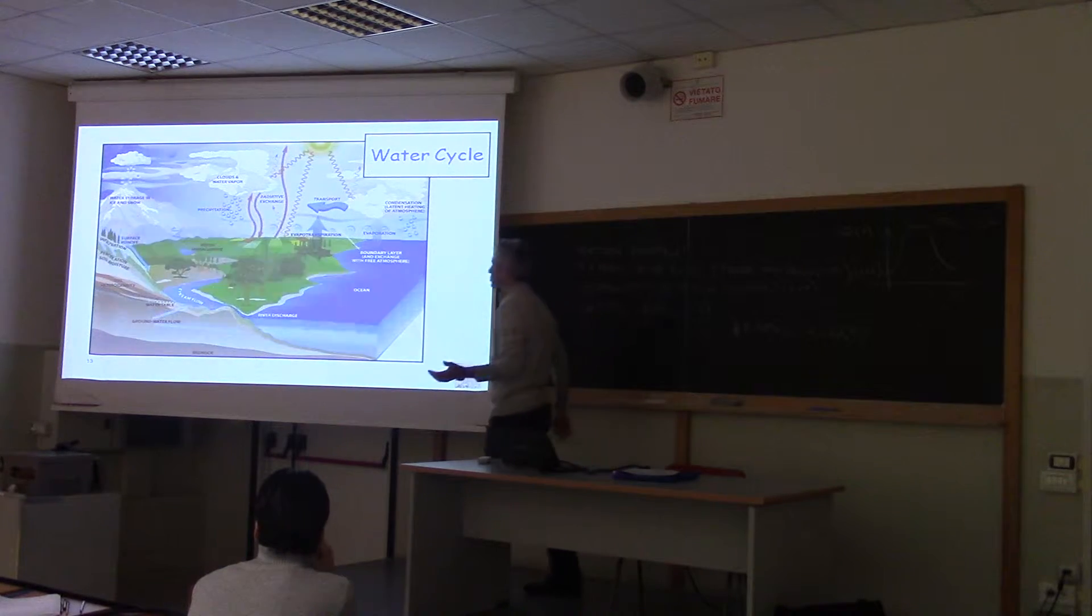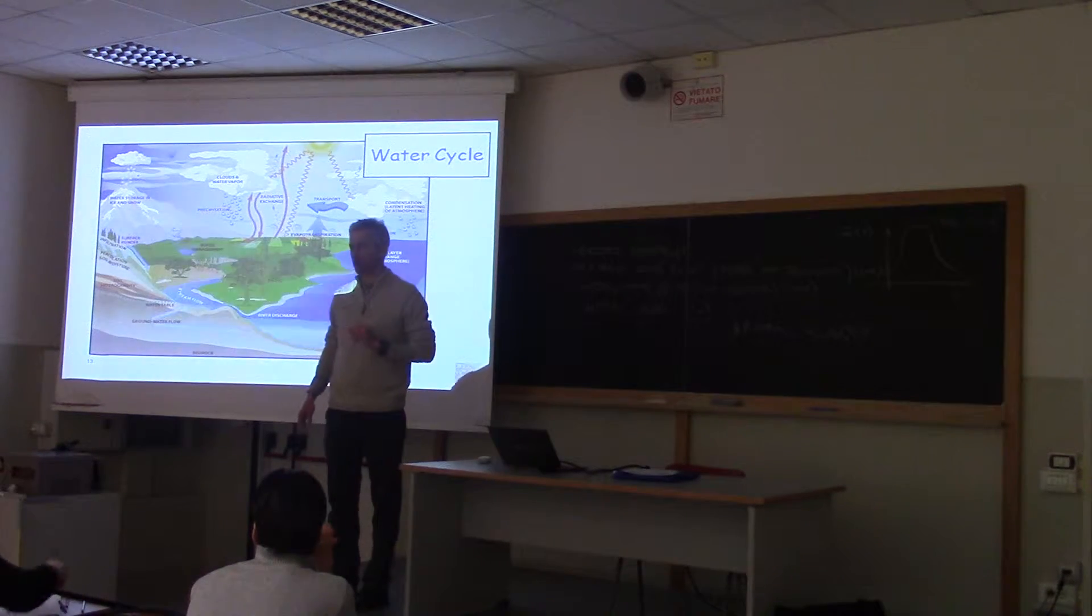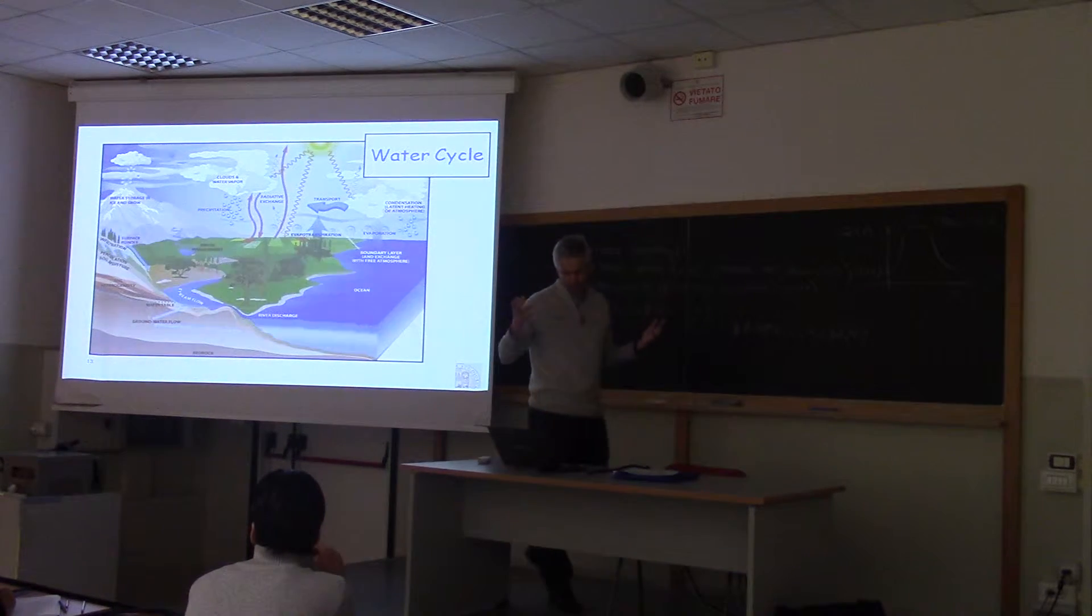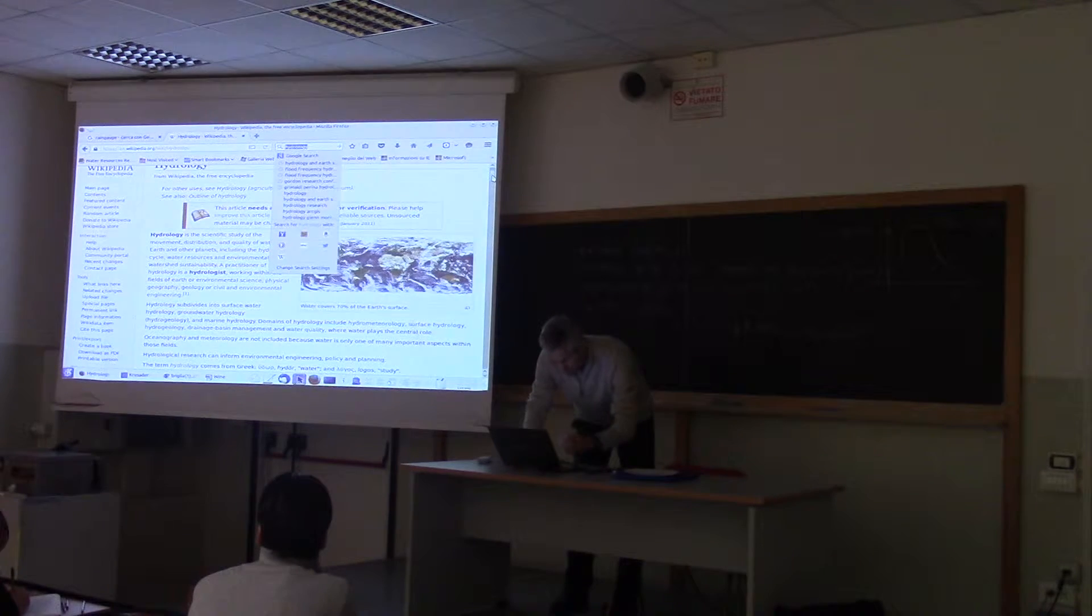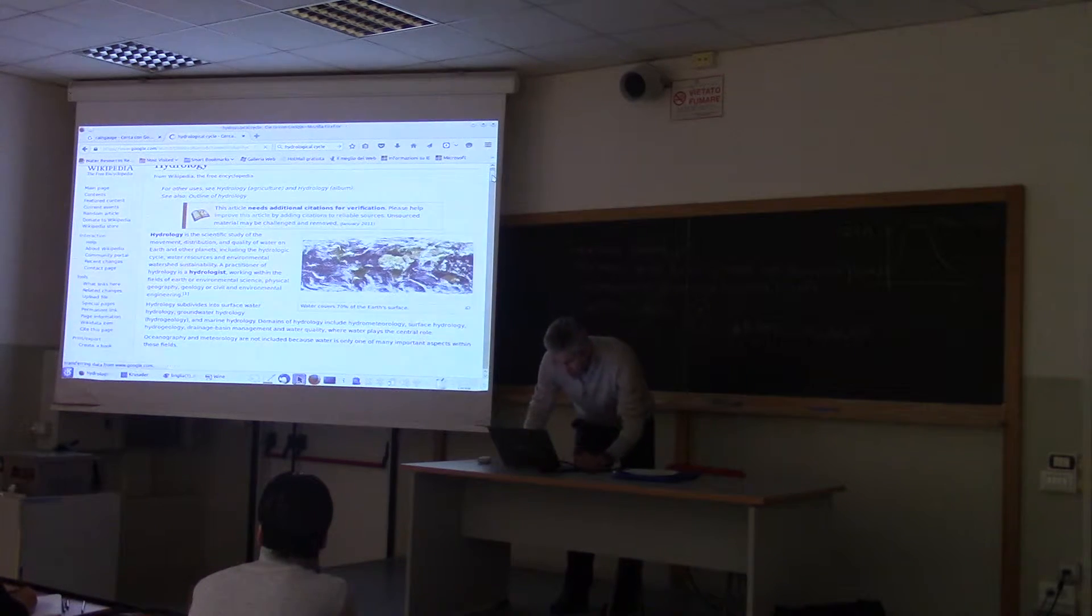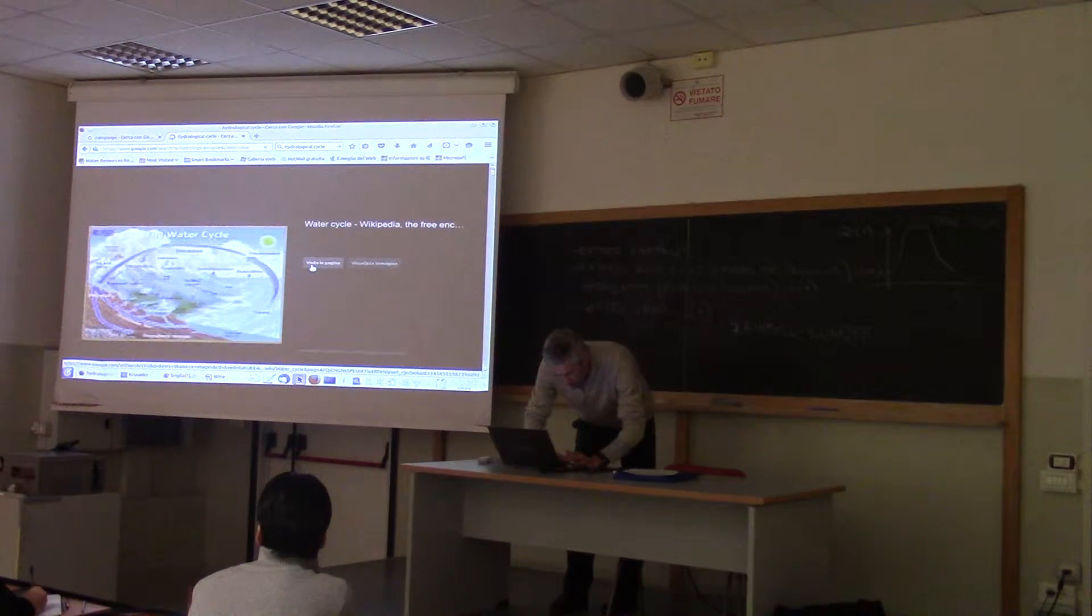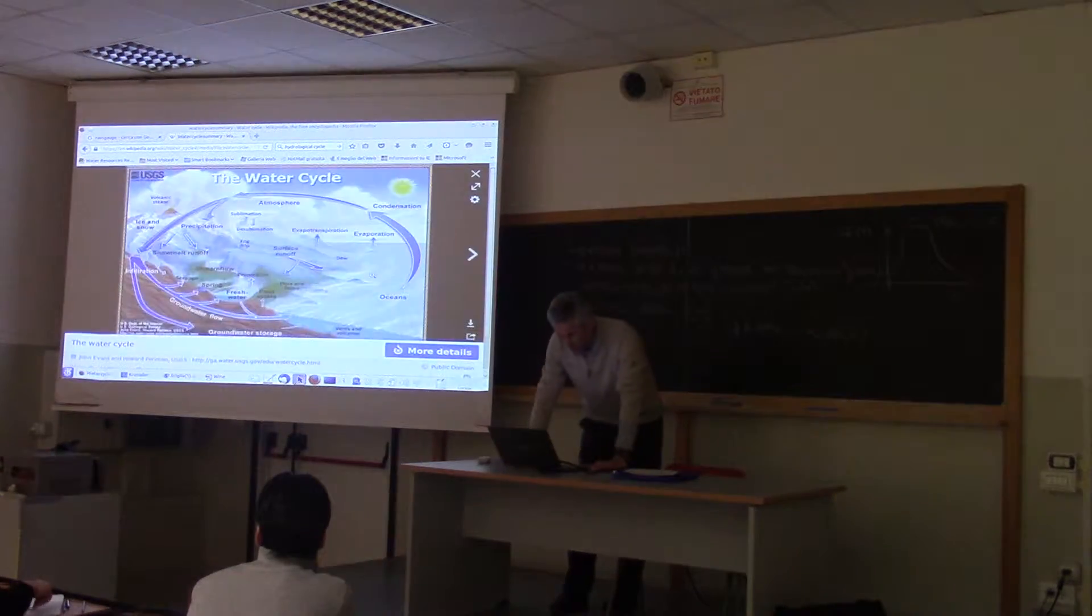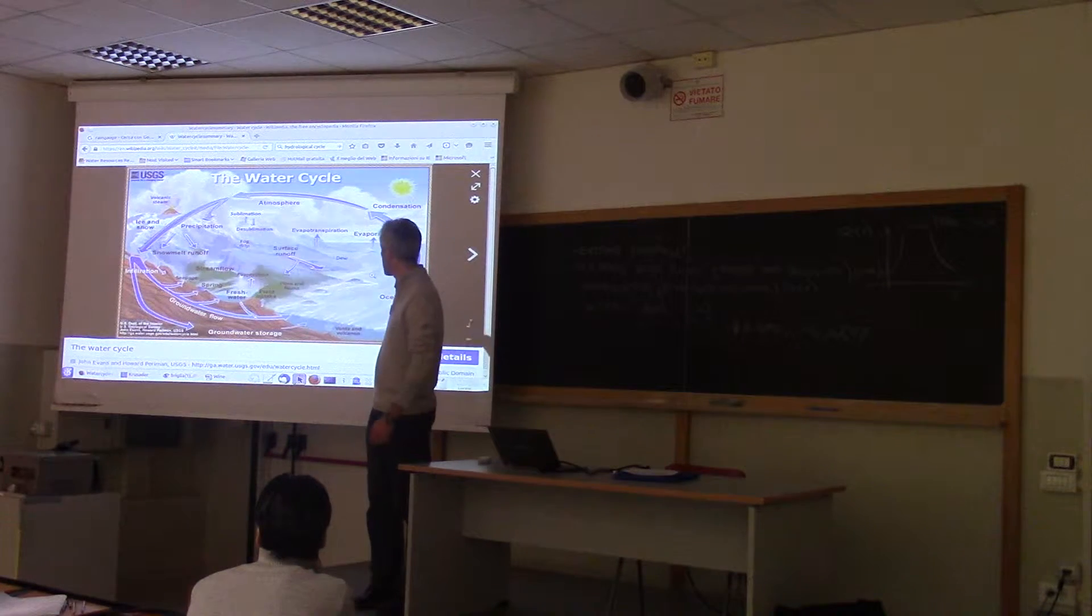This is one of the many pictures of the water cycle that you can find on the web. And the nice thing of these pictures is that they show you the processes that are involved. It's something that you can easily find. Let me go back to a webpage. If I Google hydrological cycle, there are many of them. And the most popular is this one because it was developed by the USGS, the United States Geological Survey. And it's free. This is a free image to use. It's in Wikipedia, in fact. This is the most popular.